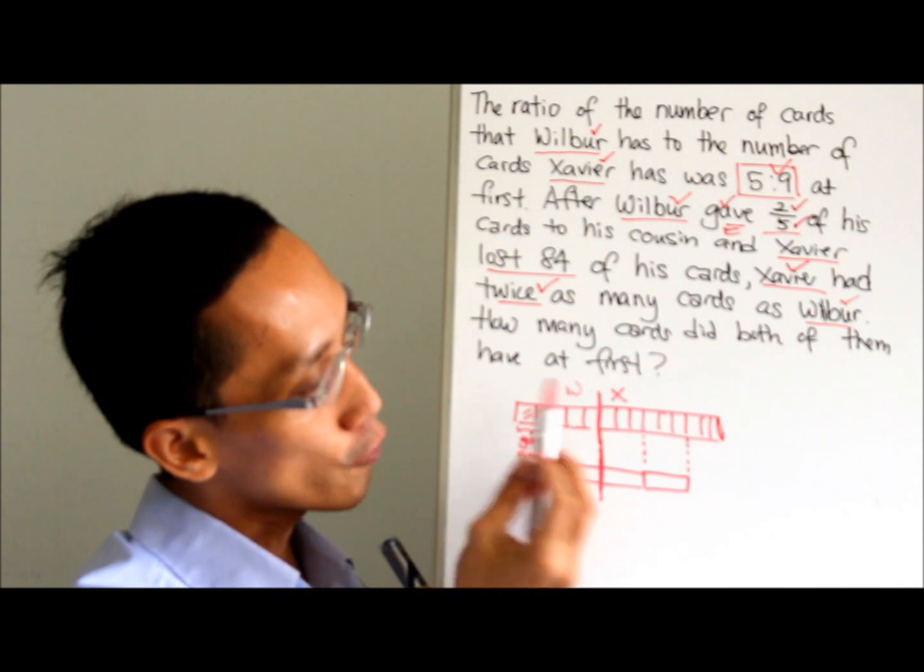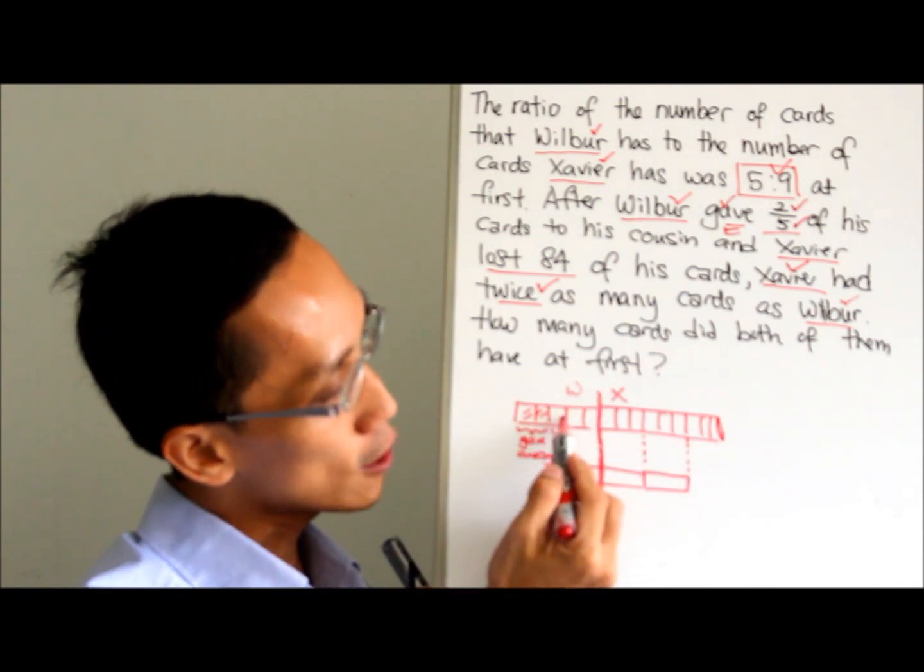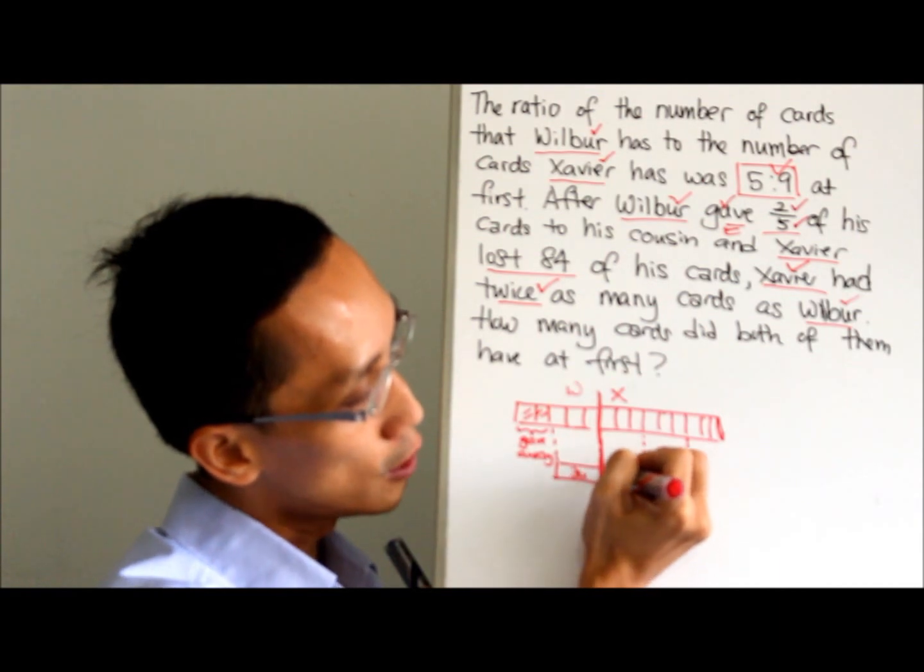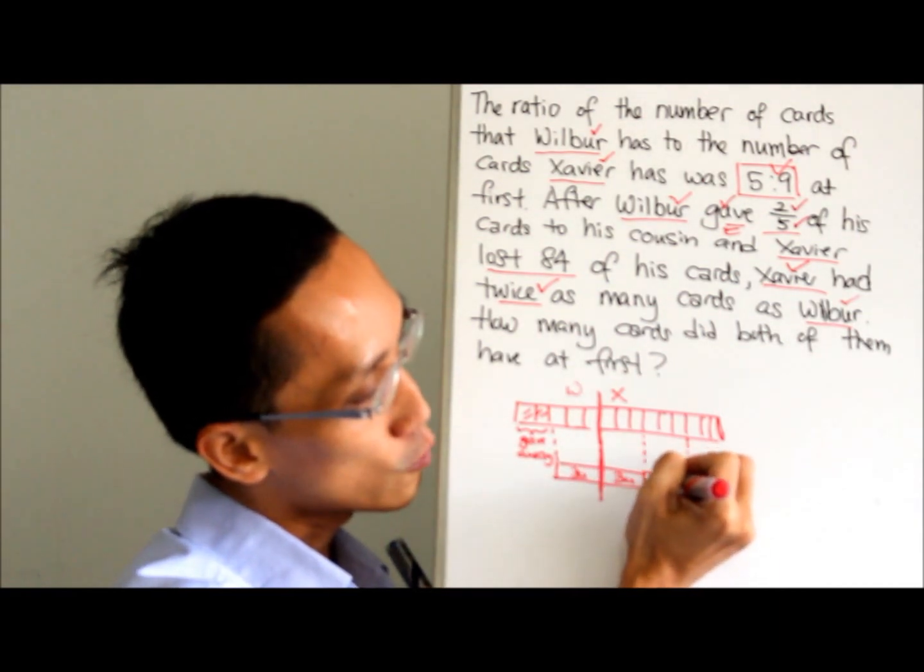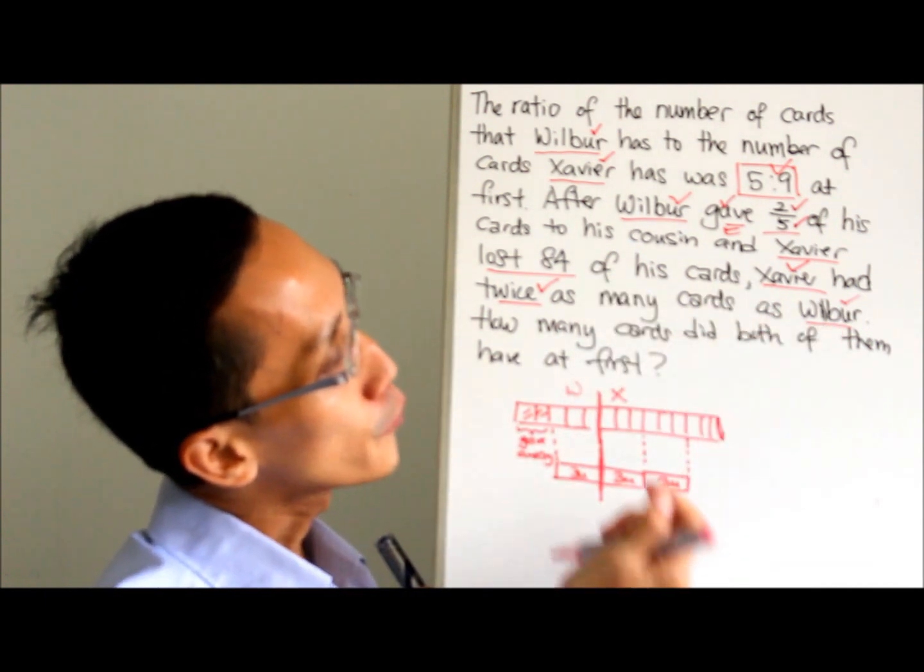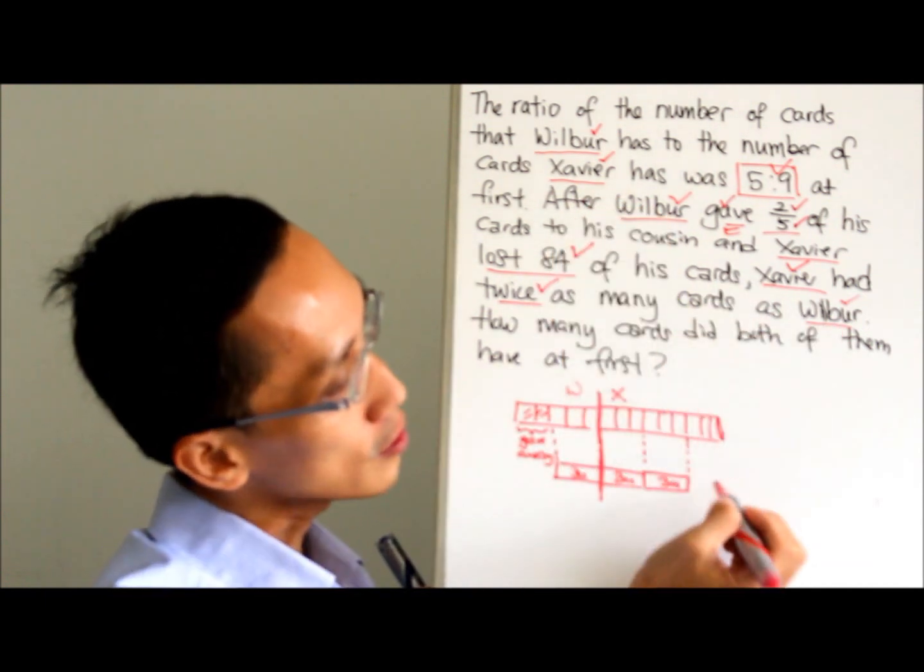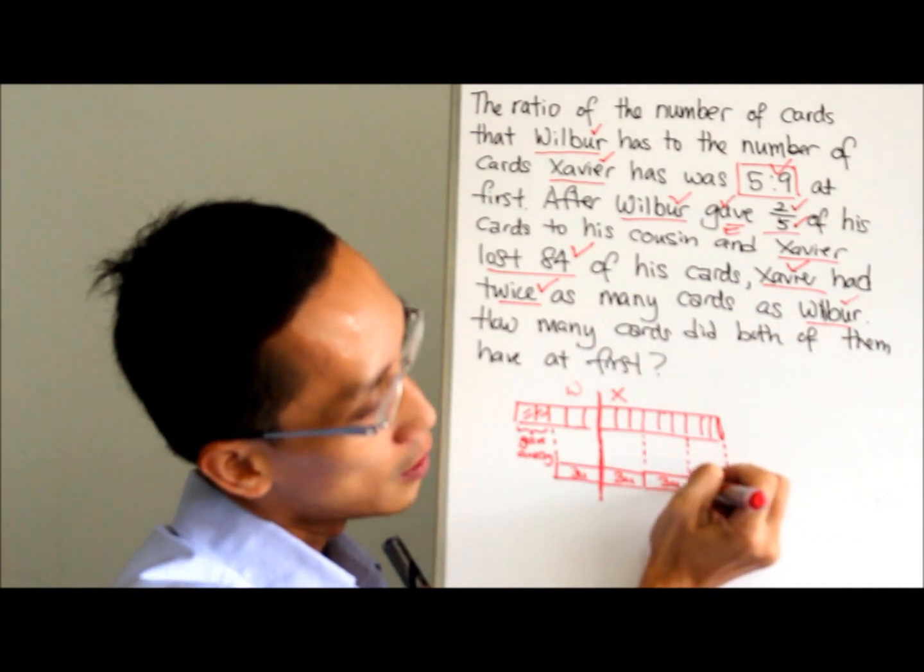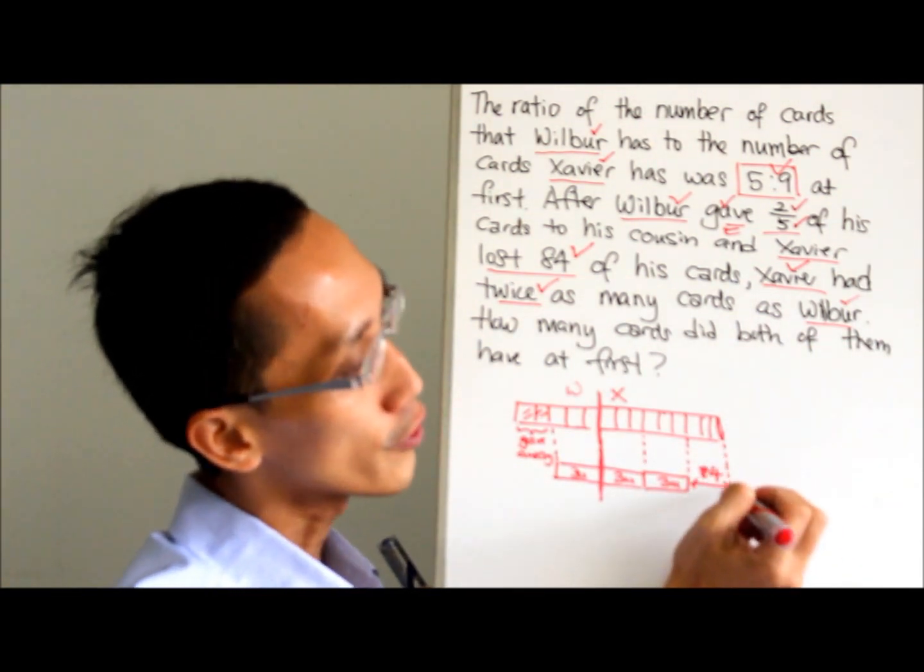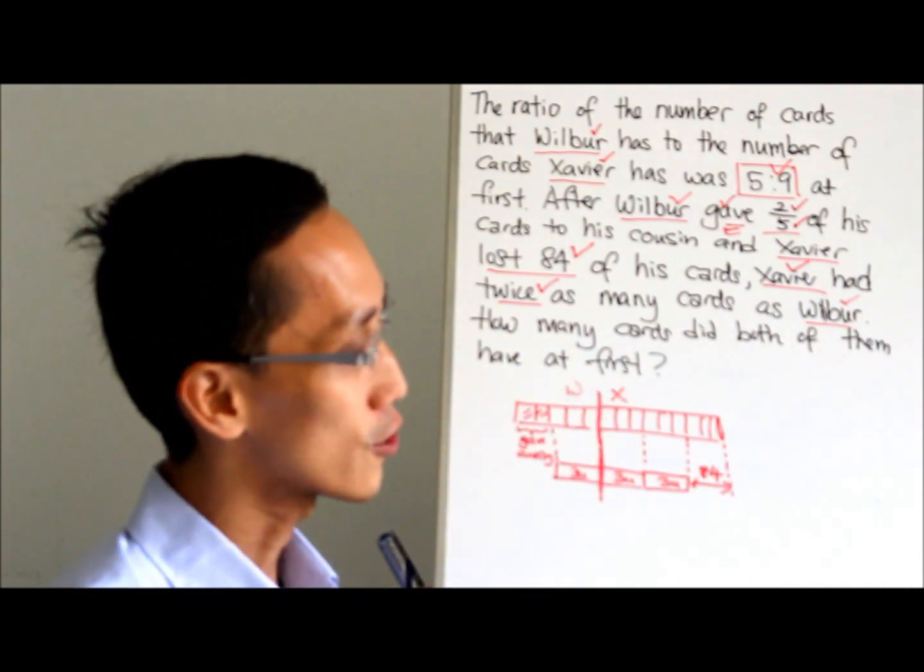If you look carefully from left to right, you can see that actually this part is three units. So you write down three units, three units, and three units. Last part, because he lost 84, so this is 84 cards.